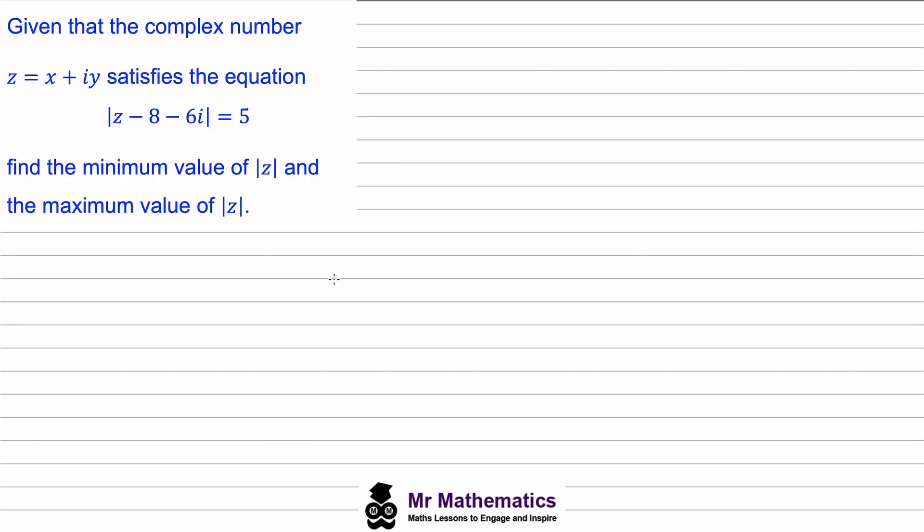Hi, so this is the second video in my series on solving loci problems with complex numbers. In this question we're given that the complex number z satisfies this equation and we've been asked to find the minimum value and the maximum value of the magnitude of z.